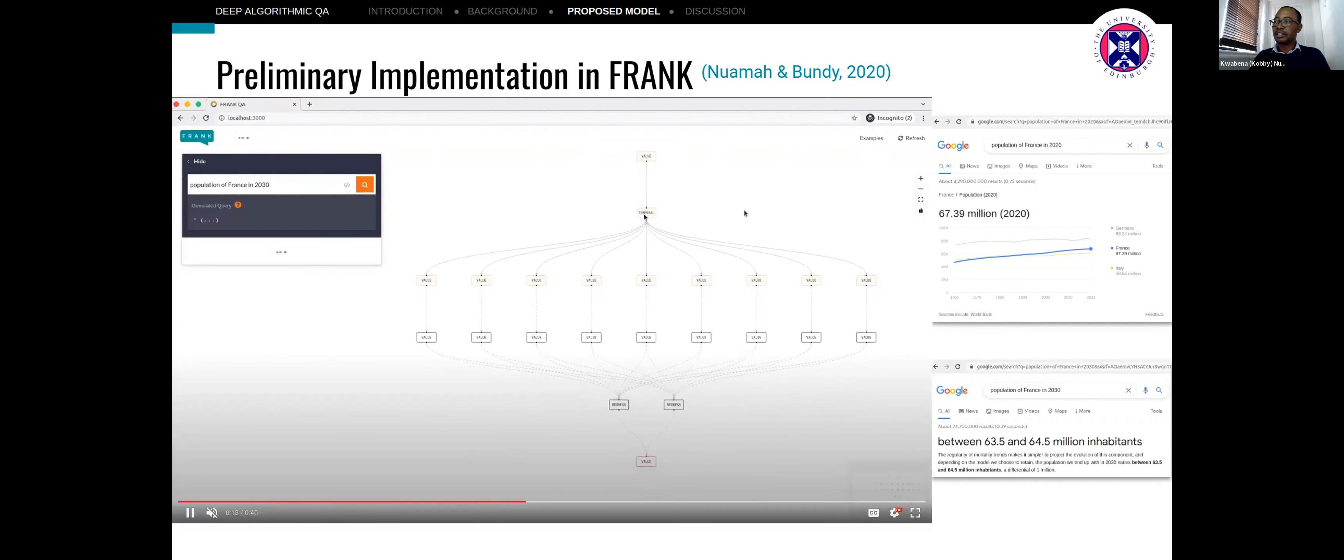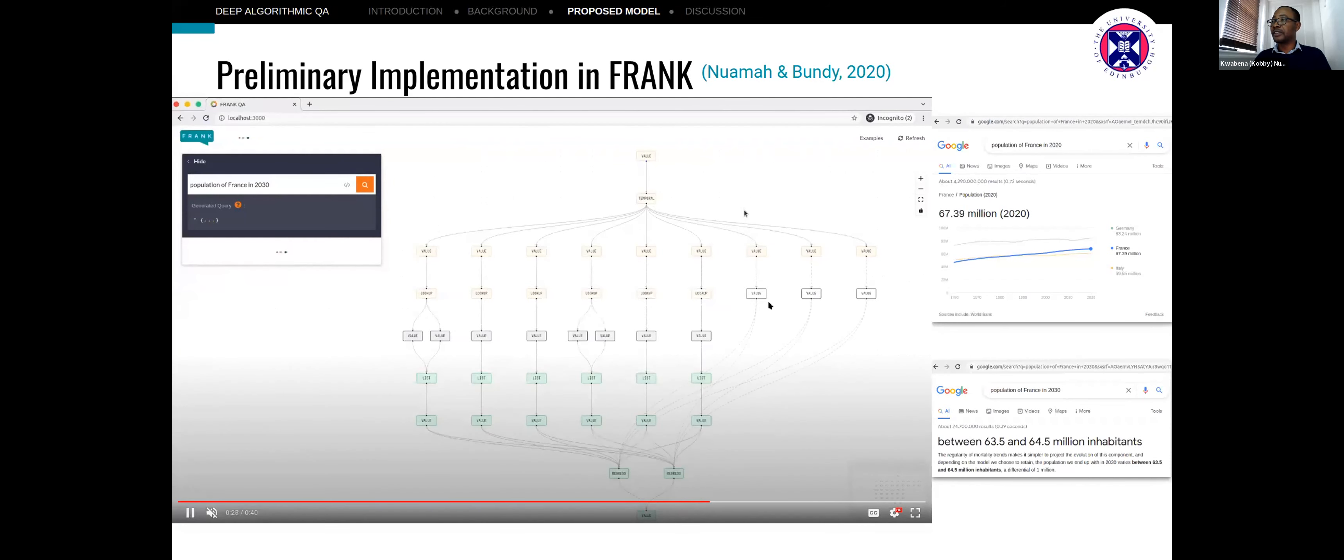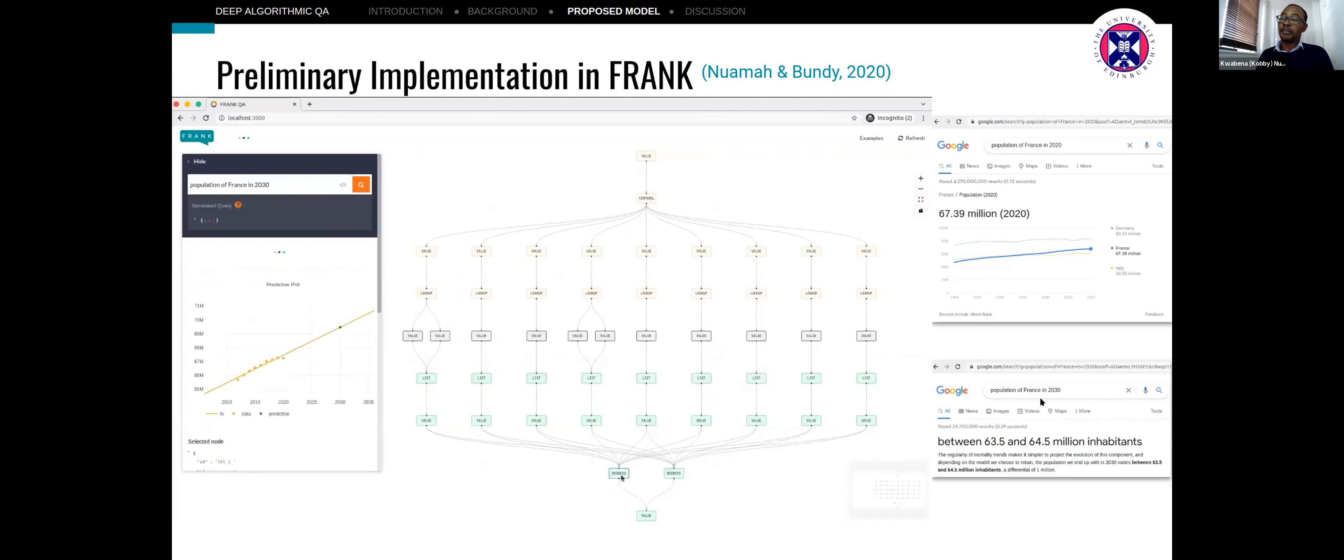In this case, using a temporal decomposition, the system finds data to instantiate the various nodes where variables need to be instantiated, looking for the populations across different times, and then combining them to generate a function from which you can perform the prediction because it couldn't look up the original answer to the question.